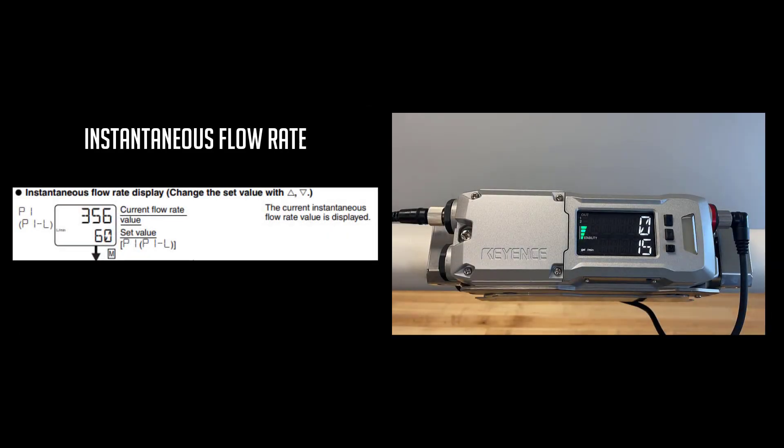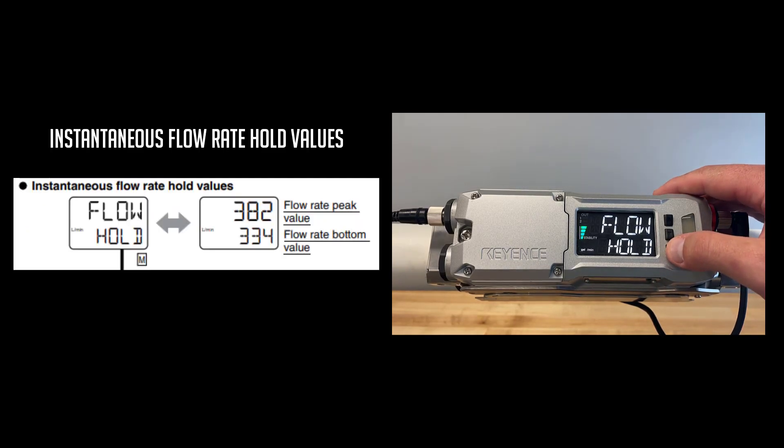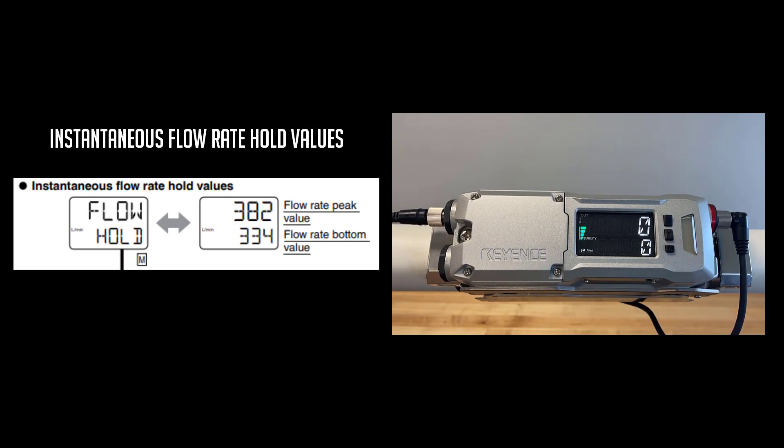By default, the unit will be set to the instantaneous flow rate display screen, where the bottom number is your threshold and the top number is your current flow rate. Tap mode to switch displays. Here we can see hold values where the top number is your peak instantaneous flow rate, and the bottom number is your bottom instantaneous flow rate at a given time.